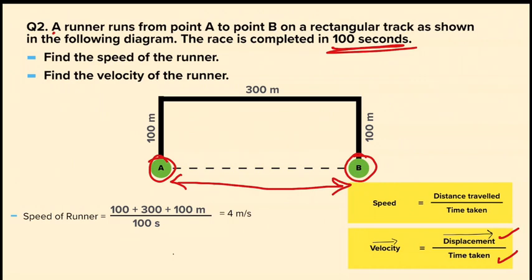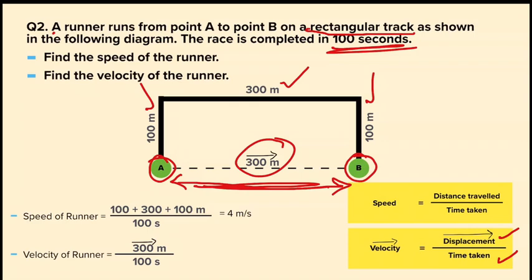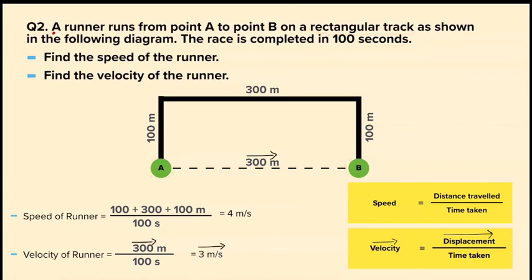In this question, the displacement from A to B is not directly given. But we can find it because this is a rectangular track — a rectangle has opposite sides equal. One side is 100 meters, so the opposite side is also 100 meters. If one side is 300 meters, the opposite side is also 300 meters. So displacement from A to B is 300 meters, and we use an arrow to denote it as a vector quantity. Velocity of the runner is 300 meters divided by 100 seconds, giving 3 meters per second.